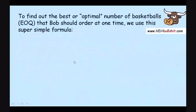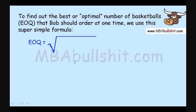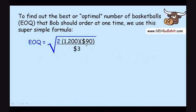To find out the best or optimal number of basketballs or EOQ that Bob should order at one time, we use this super simple formula. The EOQ equals the square root of 2 multiplied by 1,200 multiplied by $90 divided by 3. Now where did we get these numbers? First of all, this square root is given as part of the formula. And this number 2 is also given as part of the formula. We did not get it from the story about Bob.